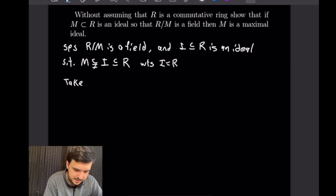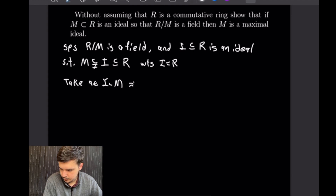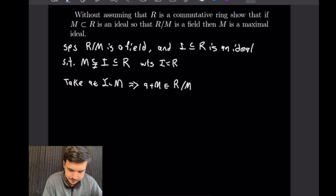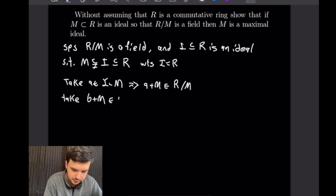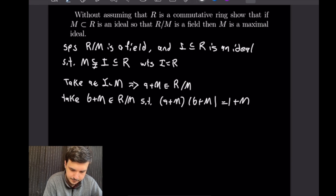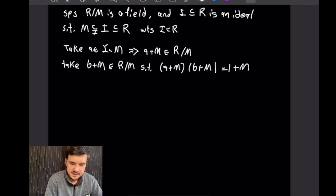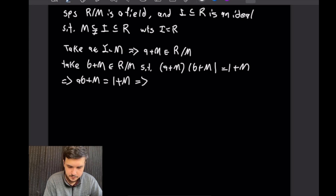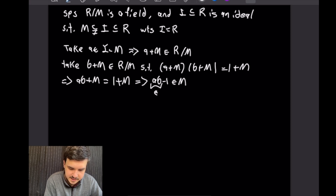Take an element a from I \ M — that is, in I but not in M. Then a + M is a nonzero element in the quotient ring R mod M. Since R mod M is a field, take b + M in R mod M such that (a + M)(b + M) = 1 + M. Using coset multiplication rules, we can write this as ab + M = 1 + M, which by definition means ab − 1 is in M.